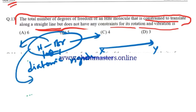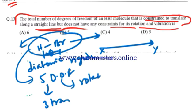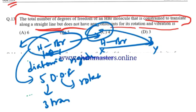For a rigid diatomic molecule, we have 5 degrees of freedom - 3 translational and 2 rotational. But the HBr molecule is moving on a straight line, which means the 3D space is reduced to 2D space. In that case, we can take 3 coordinates.